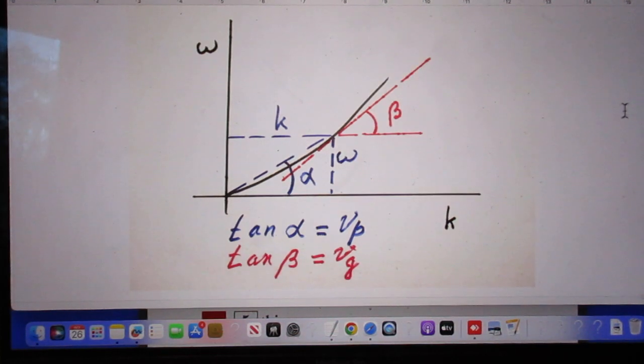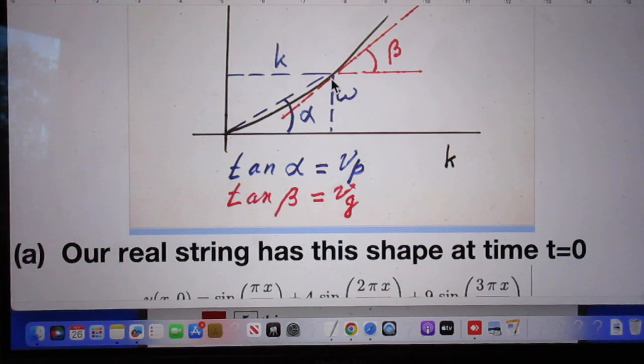If you plot now omega versus k, for an ideal string, omega versus k would be a straight line. But here it is not a straight line. It is more like this line. And so now, if you want to know what omega divided by k is, which is the phase velocity, that would be this value for omega divided by this value of k when you're here at the curve. And that is the tangent of alpha. So the tangent of alpha is the phase velocity. But if you draw this red line, which is tangential at this point of the curve, then the tangent of beta is the group velocity, that is dω/dk.